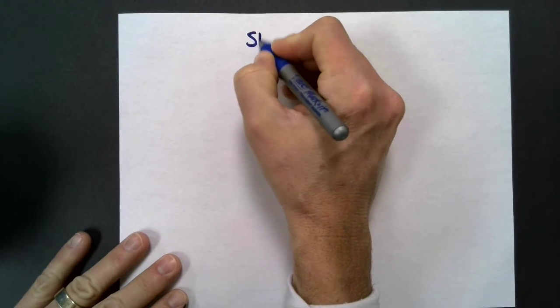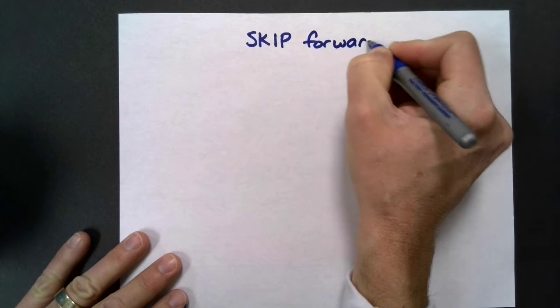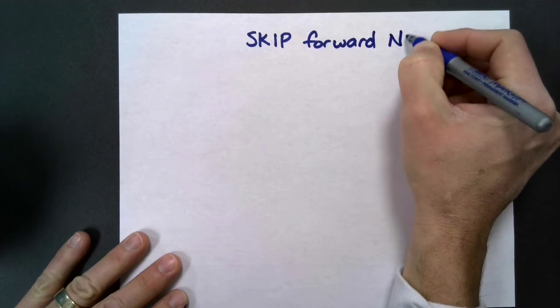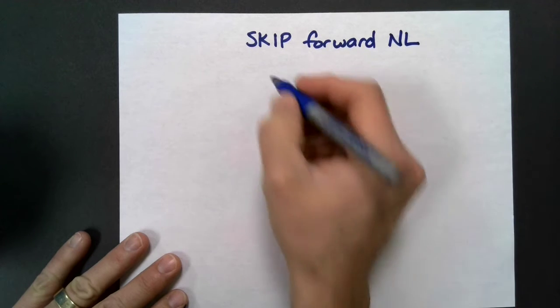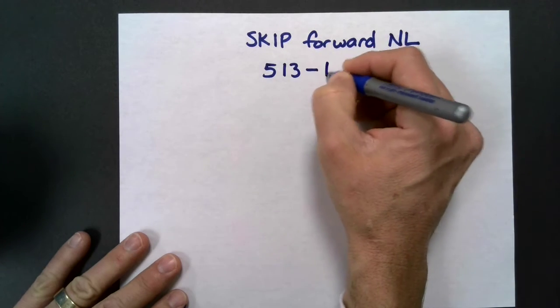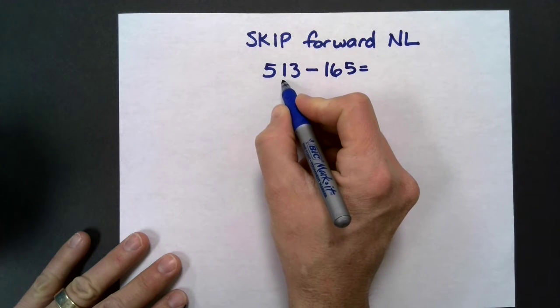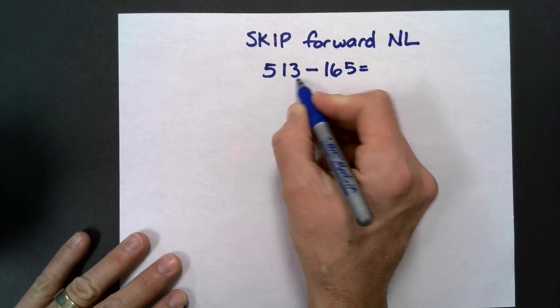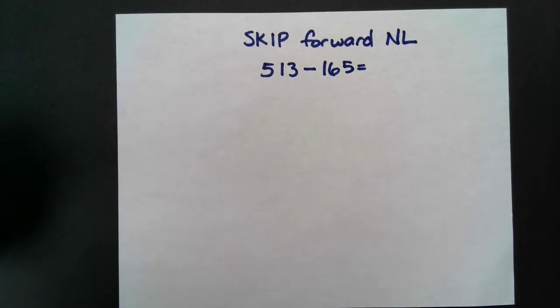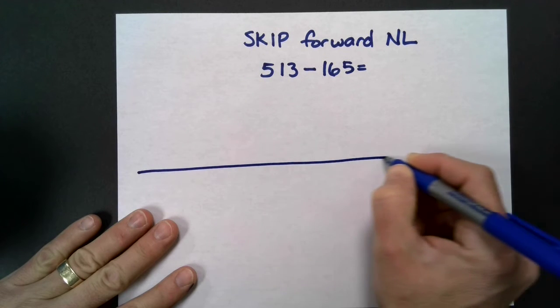Today we're going to use the skip forward number line strategy. In this case, I have 513 and I'm subtracting 165. I'm trying to take away more tens than I have in the 513 and I'm taking away more ones. So this is a great problem to use a number line strategy with.